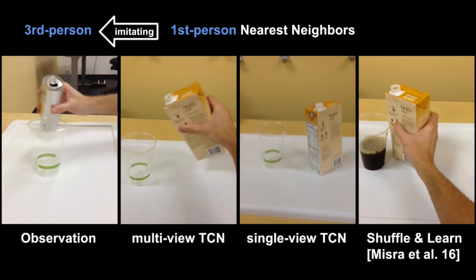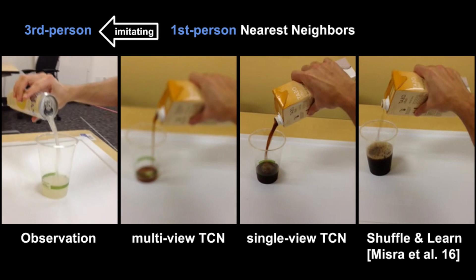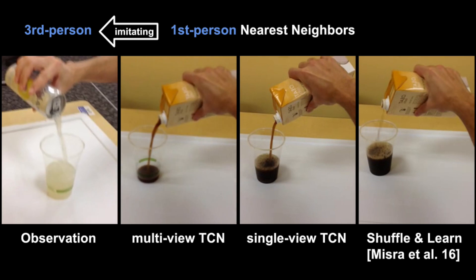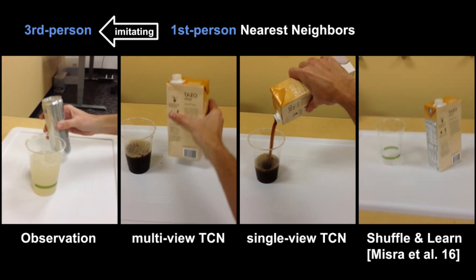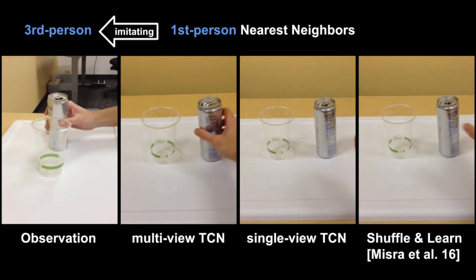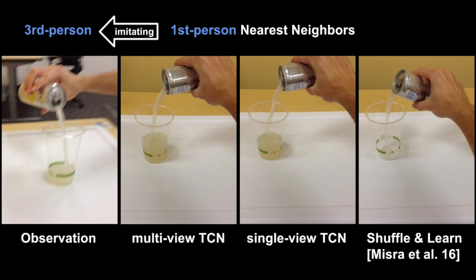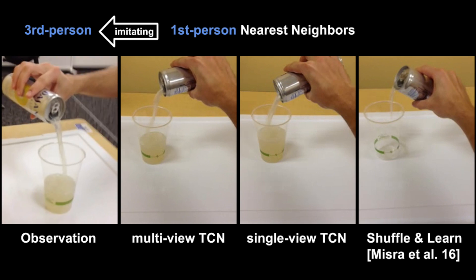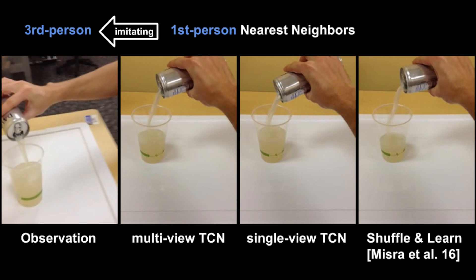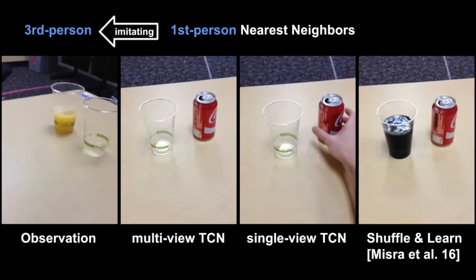Here we show nearest neighbor imitations. For each observation frame, we find the nearest neighbor frame from another test-pouring video. None of these containers have been seen during training. In the same way that a robot would perform an imitation, demonstrations are observed from a third-person viewpoint, while imitations are taken from a first-person viewpoint.